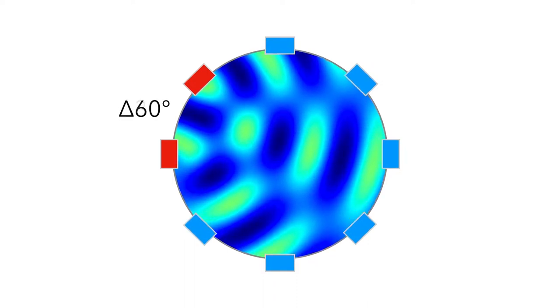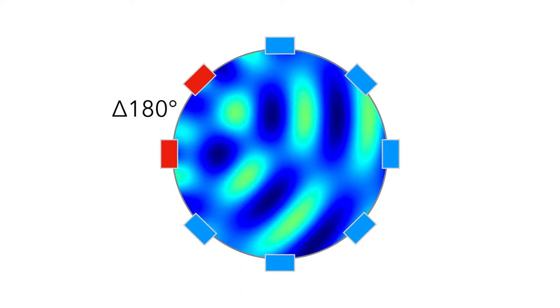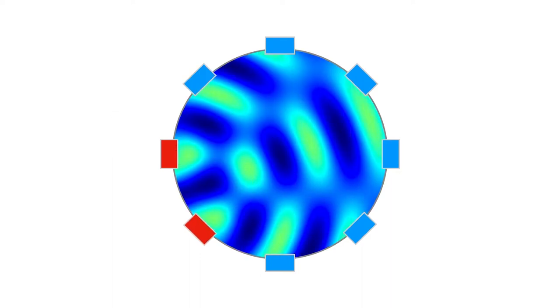We can generate an infinite number of different interference patterns by changing the relative phase of the two emitters, and we can also pick different combinations of emitters.